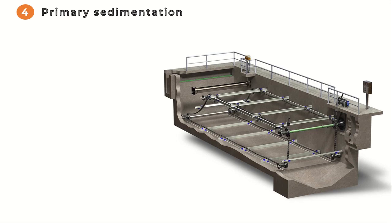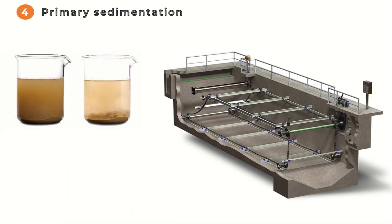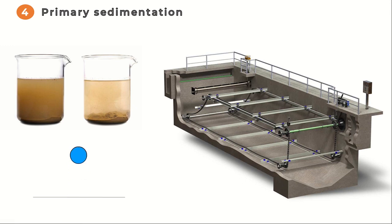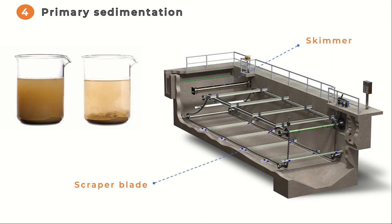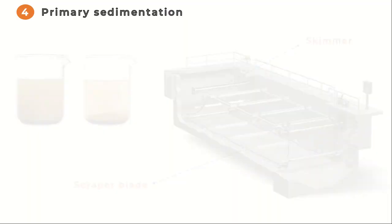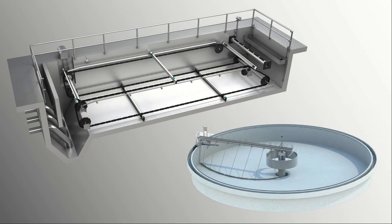The fourth step is primary sedimentation. The wastewater is transferred to large tanks where suspended solids and organic matter settle to the bottom due to gravity. The settled solids, called primary sludge, are removed for further treatment, while the partially clarified wastewater moves on to the next stage. Primary sedimentation tanks also contain equipment to remove floating solids and greases from the surface. Two common configurations are rectangular and circular.